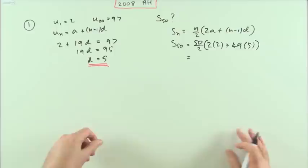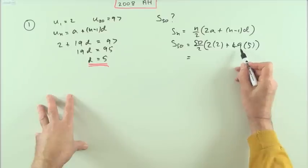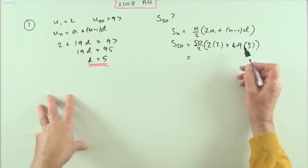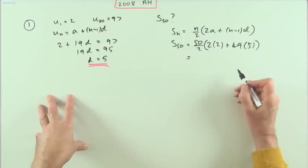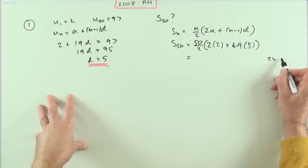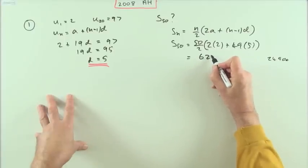There's just a bit of arithmetic that you could do in your calculator. That's 4 plus 245 equals 249. 50 over 2 times 249... 25 times 249 is 6,225.